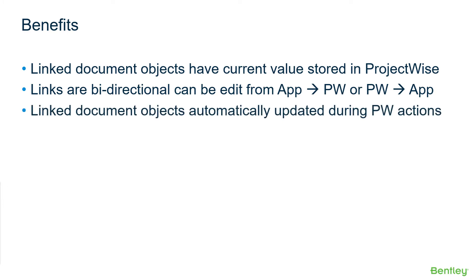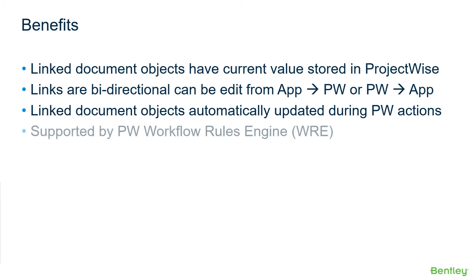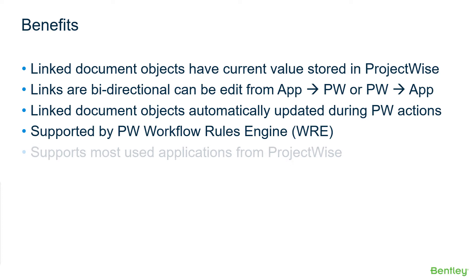This bidirectional update can be executed using the ProjectWise ribbon tool and/or application key-ins. Linked document objects can be automatically updated during key ProjectWise actions like open, export, checkout, copied out, and create renditions. ProjectWise workflow rules engine rules can also perform an update title block action to perform the Attribute Exchange function.